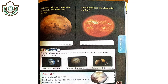Now let's move on to page number 47. Which was the only country to reach Mars in its first attempt? The answer is India. And which planet is the closest to the sun? Mercury. So we are done with this chapter. I hope you will be able to know the position of all the planets in our solar system. Thank you.